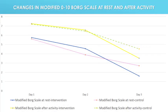This figure shows the change in the modified 0-to-10 Borg scale at rest and after activity between the intervention and control groups. The blue and yellow lines represent the intervention group, and the difference between days three and one in the at-rest mode is about 5 points and in the activity mode about 4.5 points. This figure shows a significant difference between the BBE and control group in both modes on day three of the trial.